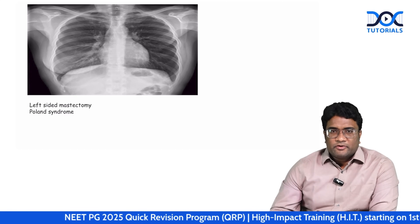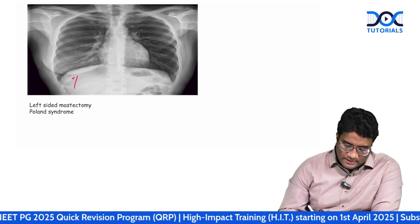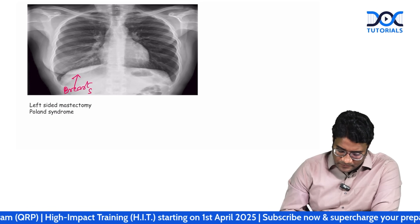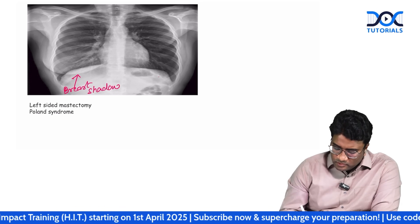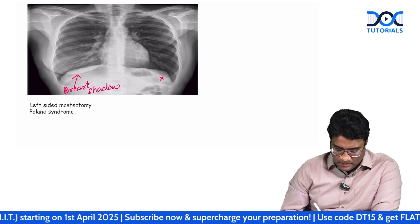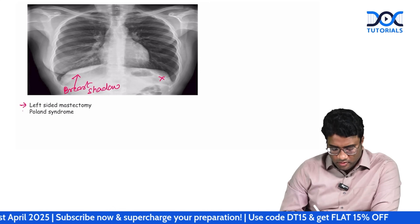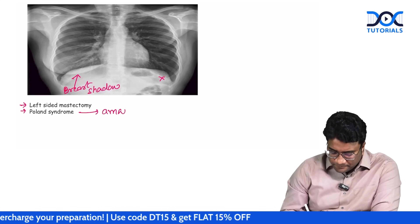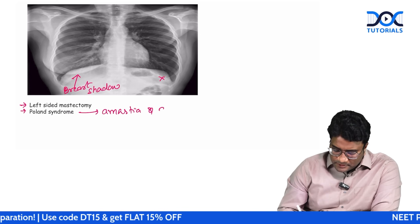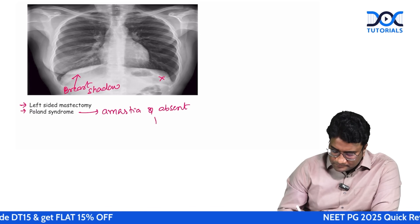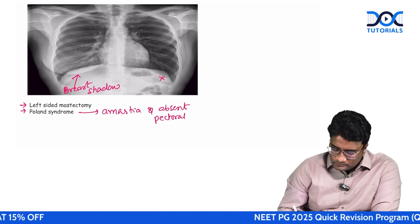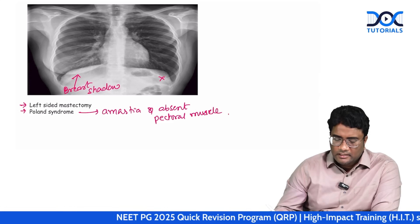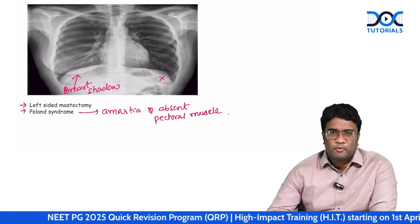In this chest radiograph, you can see the breast shadow on the right side but not on the left side. This must be a left-sided mastectomy or Poland syndrome. Poland syndrome is amastia with absent pectoral muscles.